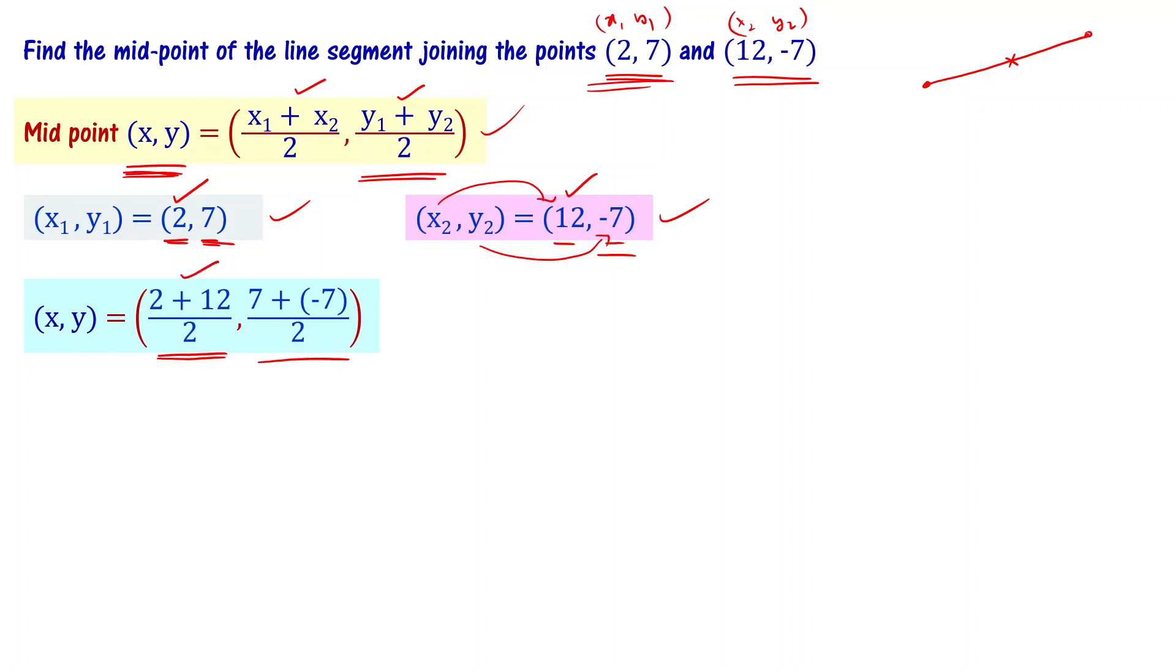(x,y) equals 14 by 2 comma 0 by 2, that is written as (7,0).